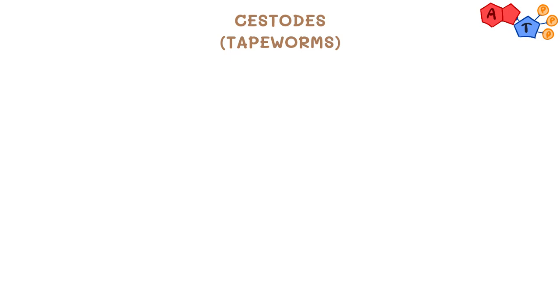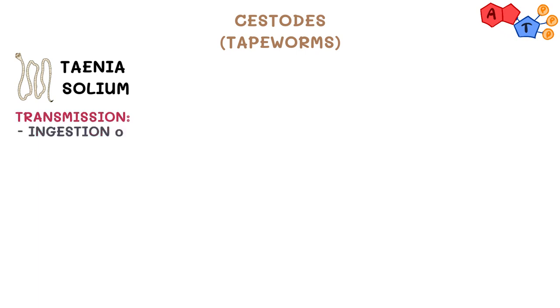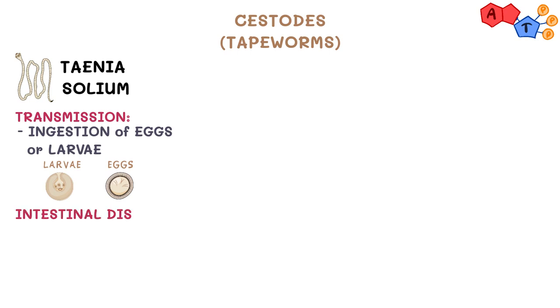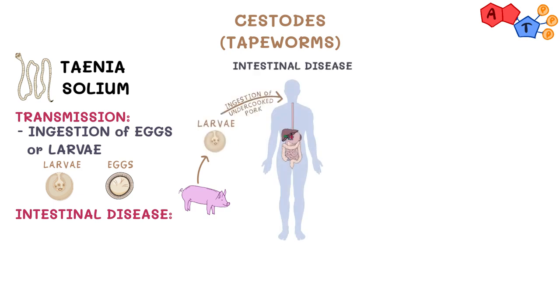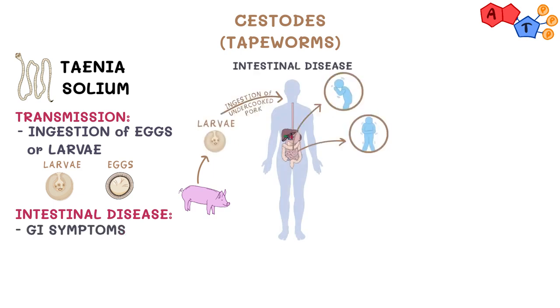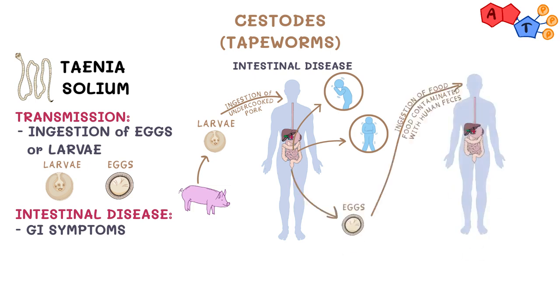Starting off with the cestodes, also called tapeworms, the first tapeworm we will talk about is Taenia solium. Taenia solium is usually transmitted to humans from consumption of either larvae or eggs. Ingestion of larvae can lead to an intestinal type of disease, and this usually comes from eating undercooked pork, leading to GI symptoms such as nausea and abdominal pain. On the other hand, ingestion of eggs from food contaminated with human feces can lead to cysticercosis.